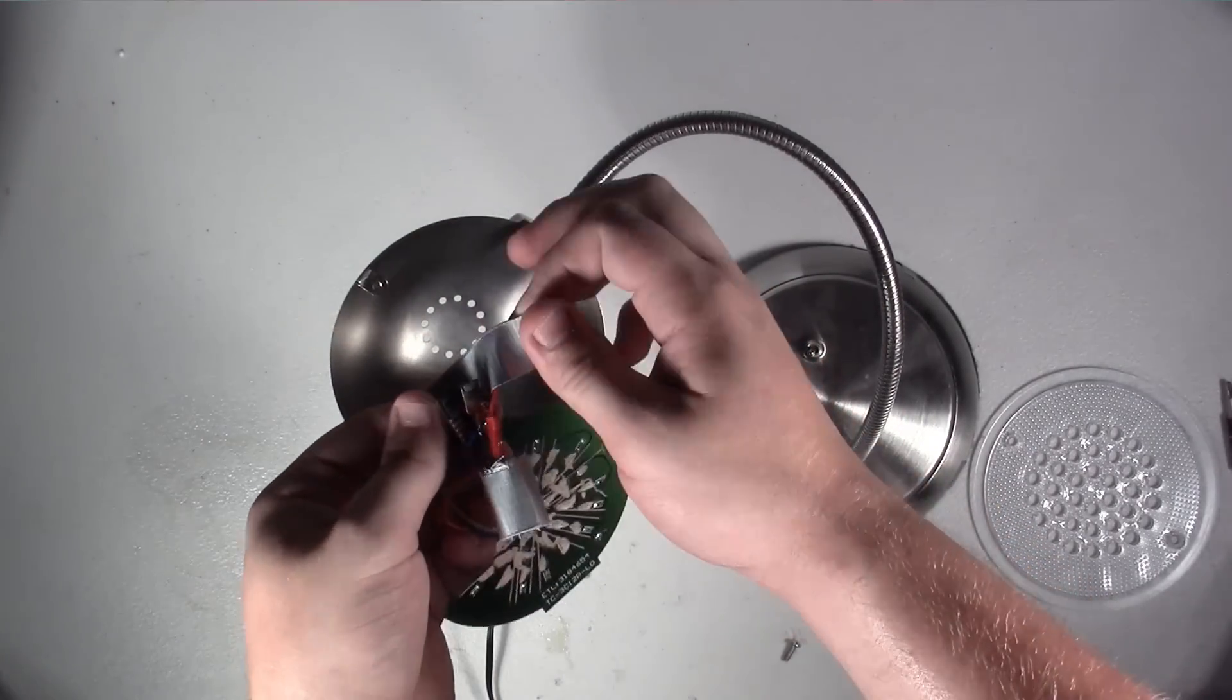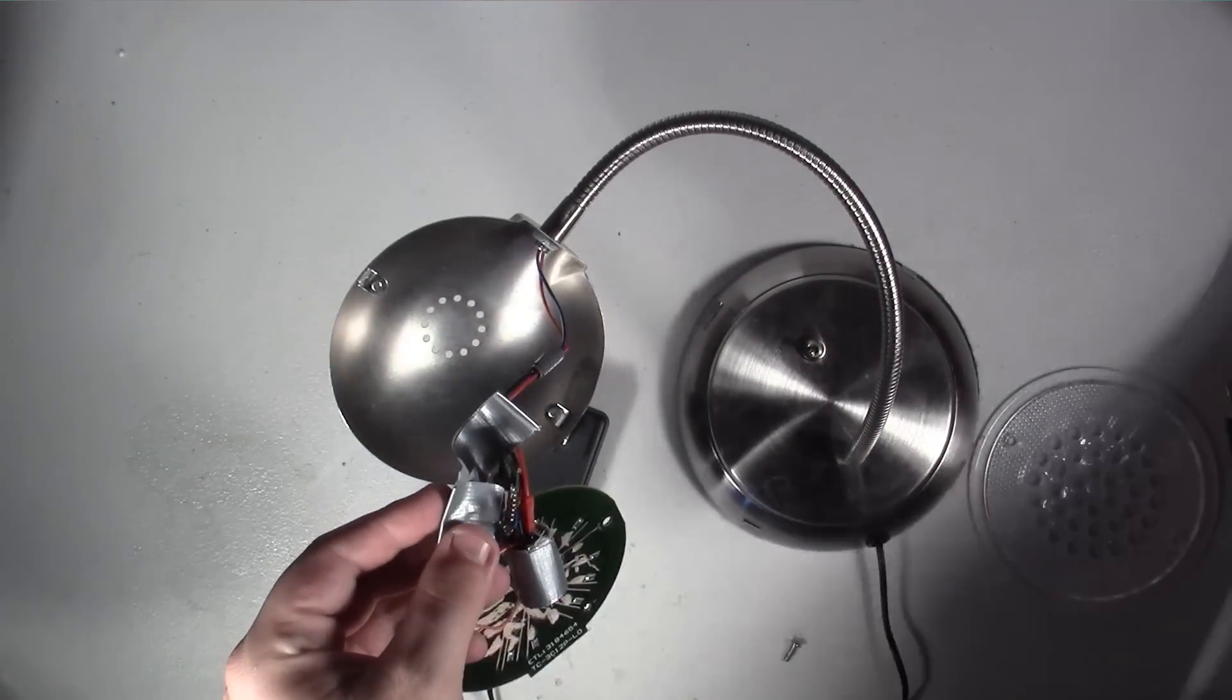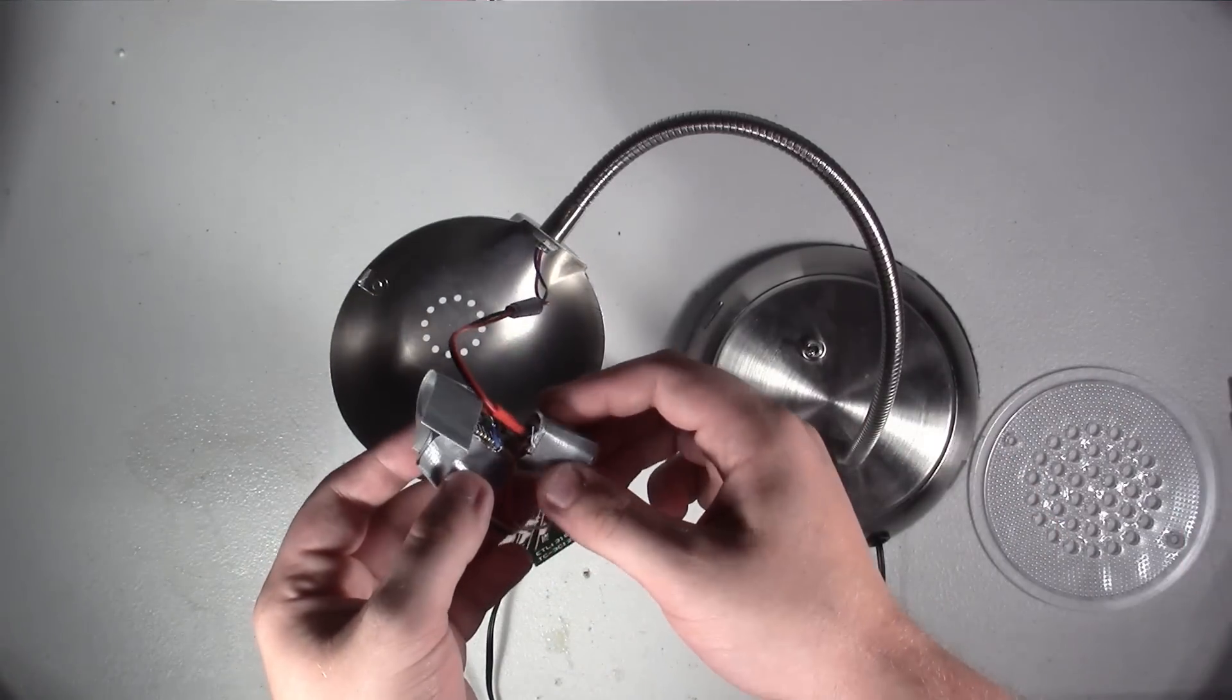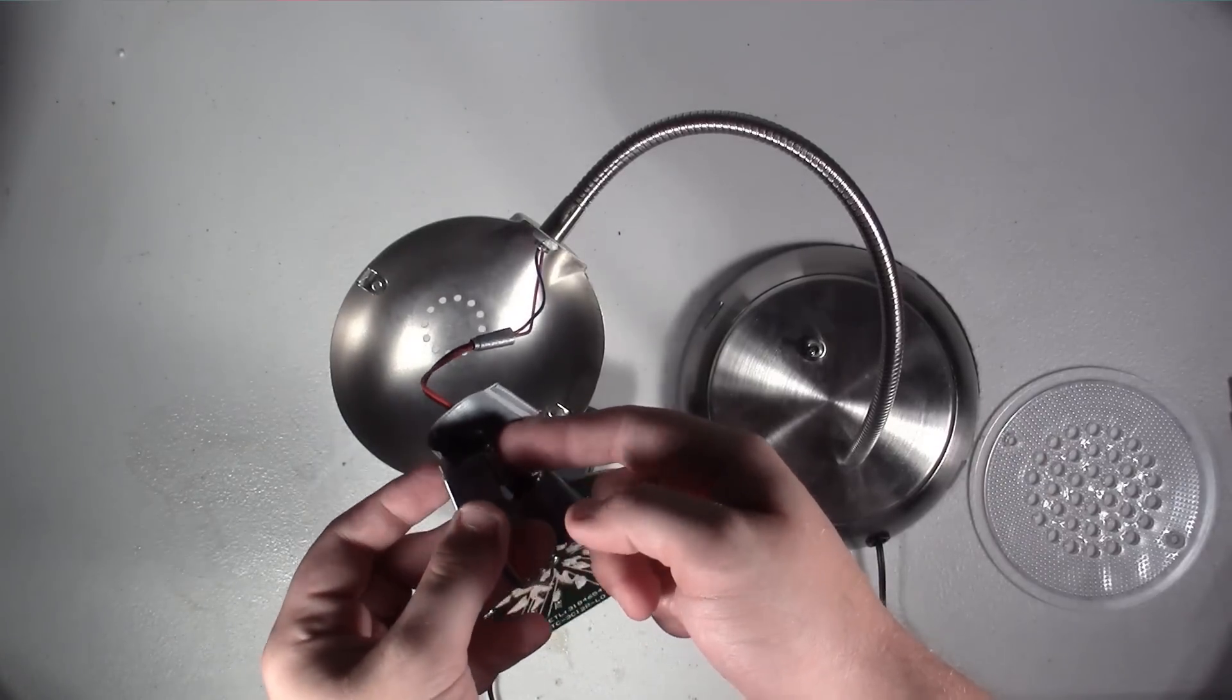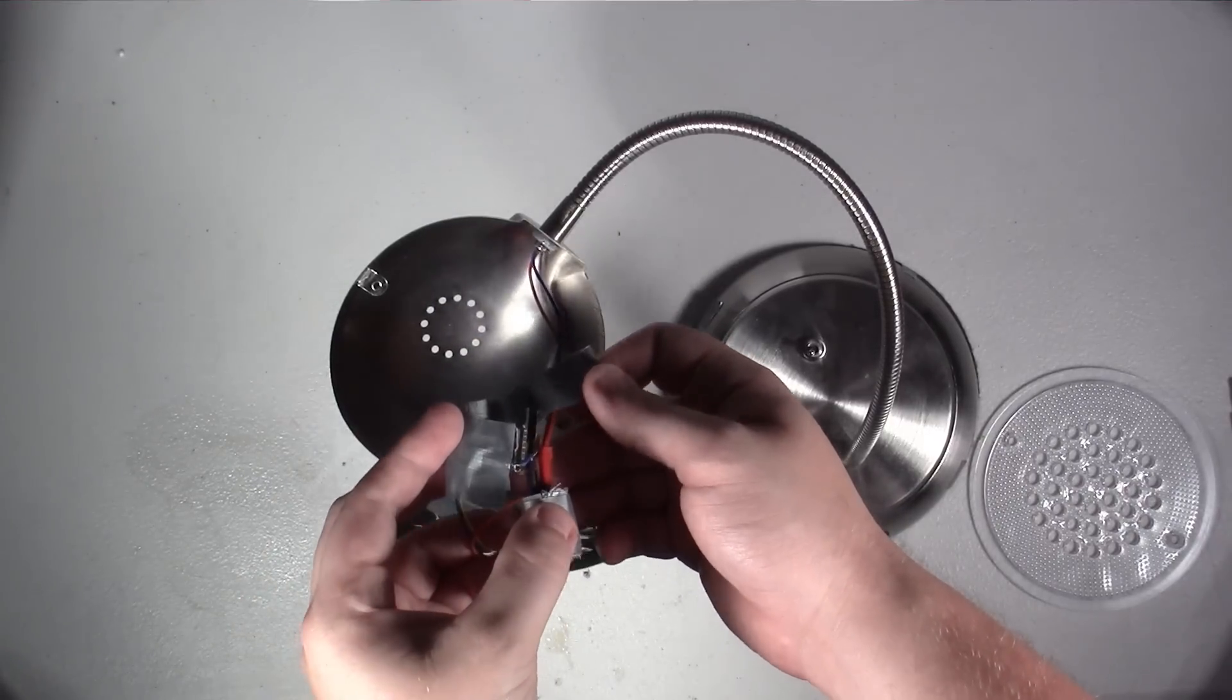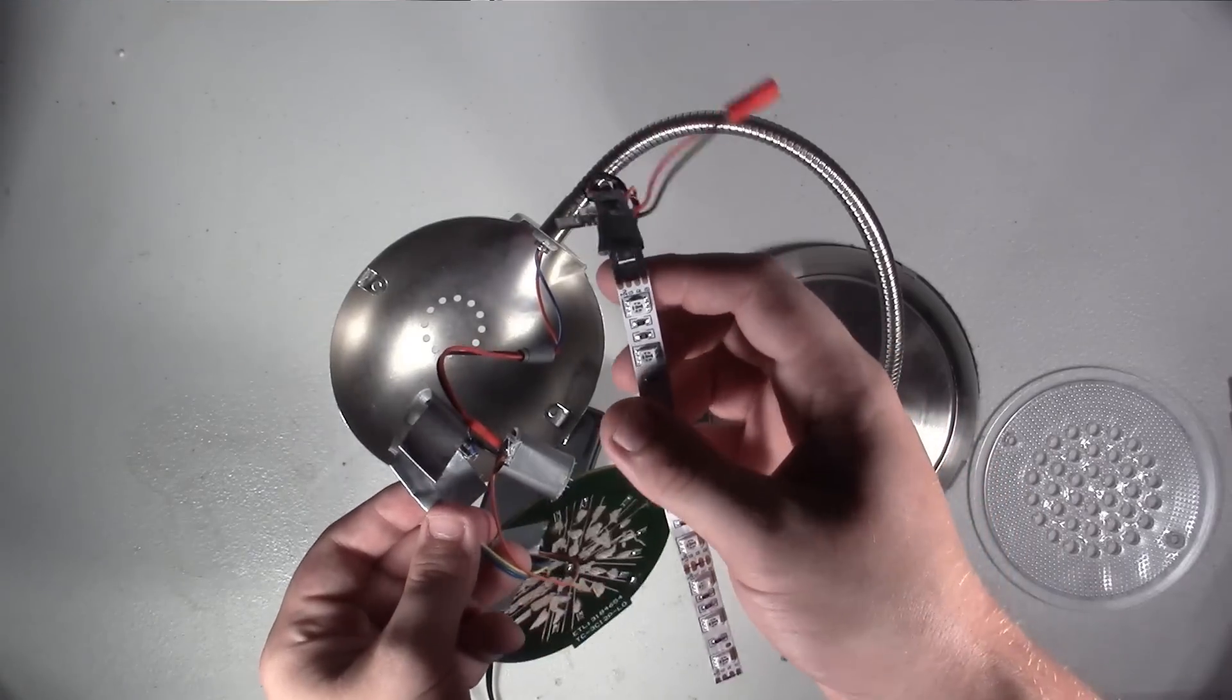Underneath that, under all this duct tape, is just an ESP12 module, exactly what we use here, and a little power regulator. The power wire comes up into here, goes through the regulator, and then into the ESP.